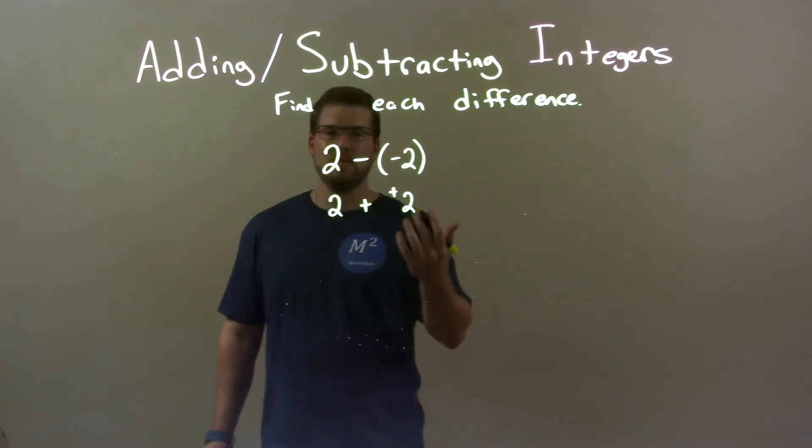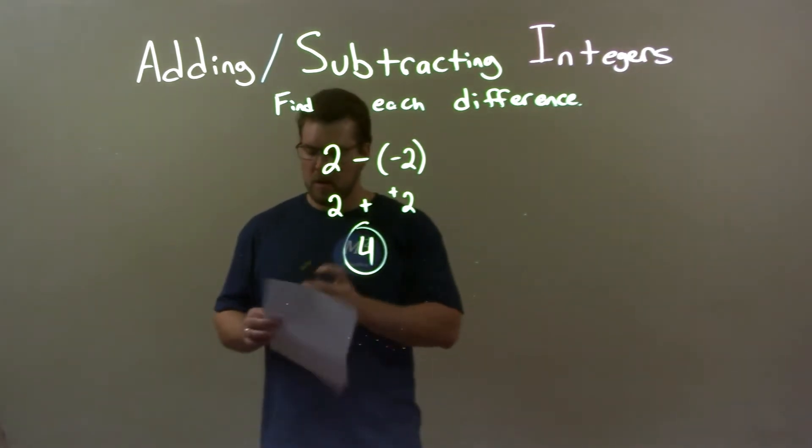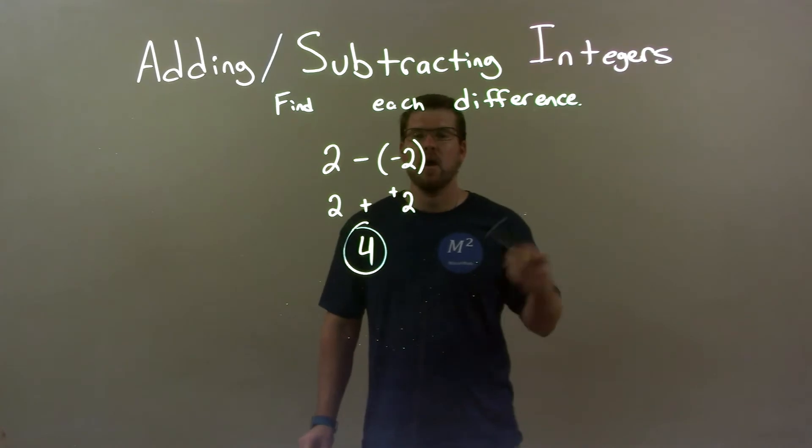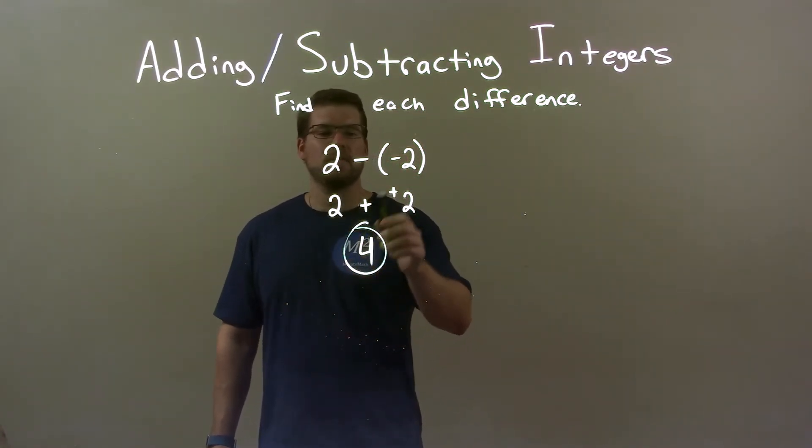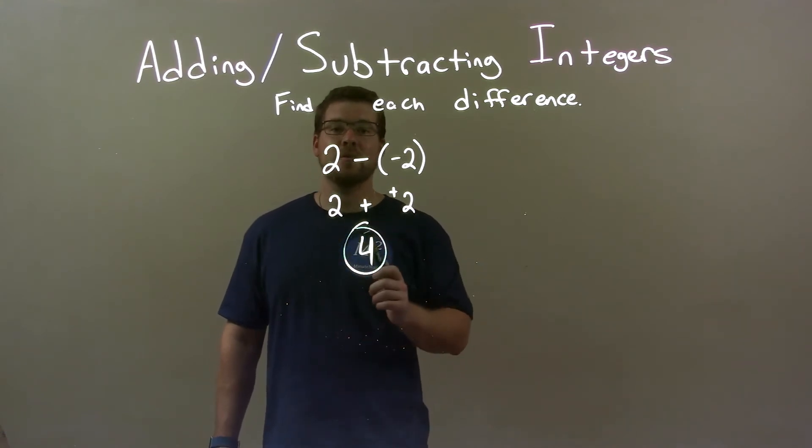Well, 2 plus 2 is just 4. So our answer here is just 4. Quick recap: We're given 2 minus negative 2. I know that subtracting a negative is the same thing as adding a positive. So we have 2 plus positive 2, which the age-old question, 2 plus 2 is 4.